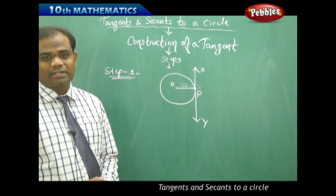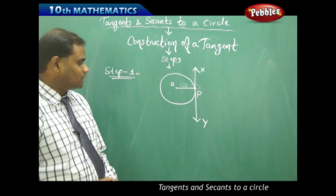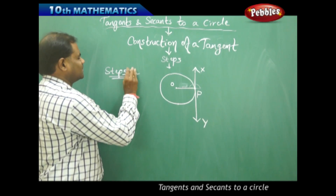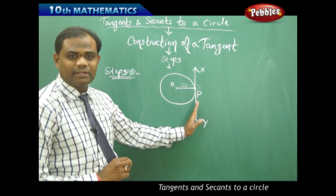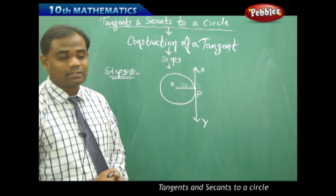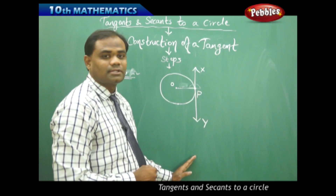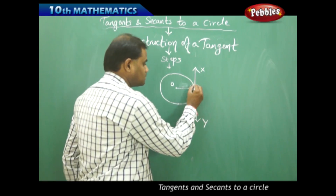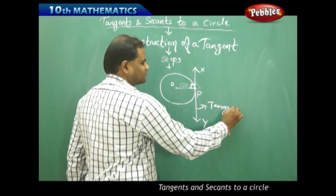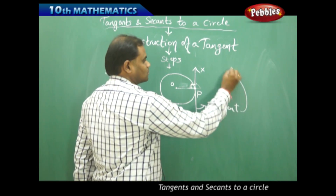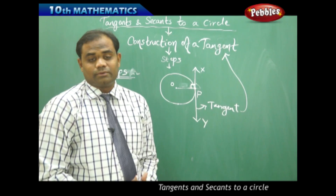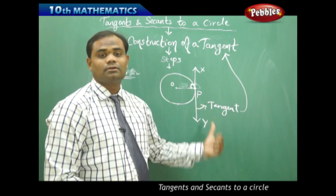So this is how we construct the tangent to the circle at point P. Step 1: draw a circle with center O. Step 2: join O and P. Step 3: take a protractor, place it at P, and mark 90 degrees. Then, extending the line along that 90 degrees gives a straight line passing through P and perpendicular to OP — this is the tangent constructed for the given circle.